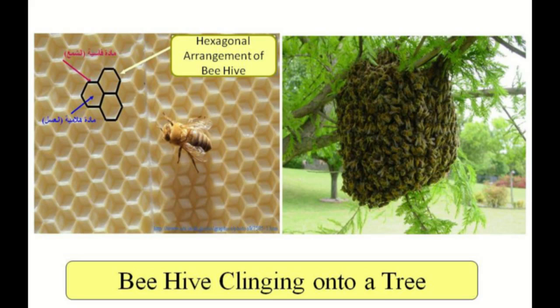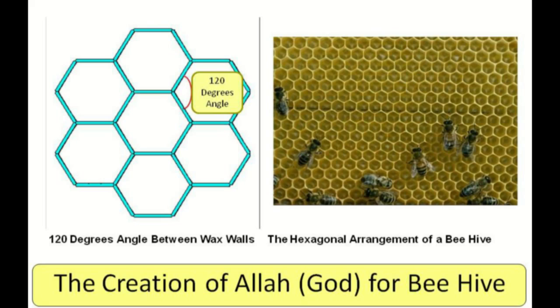If we ponder upon another thing: the vibration produced from the hundreds of bees around the hive produces so much vibrational energy, and yet the hive remains stable. This means that the design of the beehive is also earthquake-resistant — it can withstand large vibrations. The main characteristic of a beehive is the hexagonal arrangement of the wax walls of the hive.